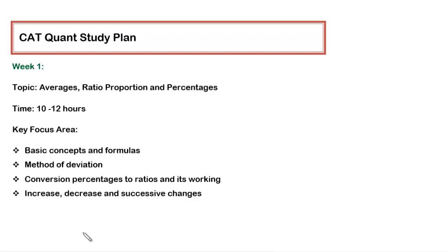I hope you have gone through the past year papers and are aware of the syllabus for the quant section in CAT and various other MBA entrance exams. Most of the questions nowadays in CAT are appearing from arithmetic, and within arithmetic the most important topics are averages, ratio and proportion, and percentages.